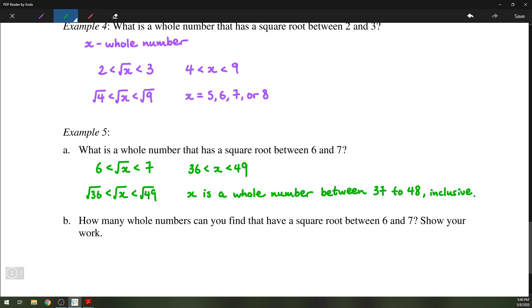How many whole numbers are there? We can simply subtract 48 minus 37, that's 11, but we're counting inclusively. So 11 plus 1 equals 12 whole numbers in total.